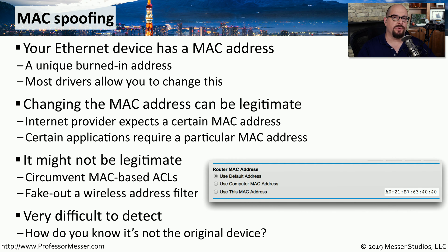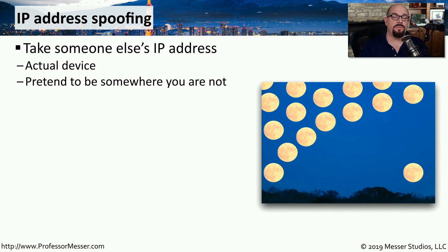Someone spoofing the MAC address of a network interface card is very difficult to detect. By simply looking at the MAC address, how do you know if a particular frame is coming from the original device or one that's been spoofed? Another common type of spoofing is IP address spoofing, where someone takes the IP address of a legitimate device and uses it to make data appear as if it's coming from that legitimate device.